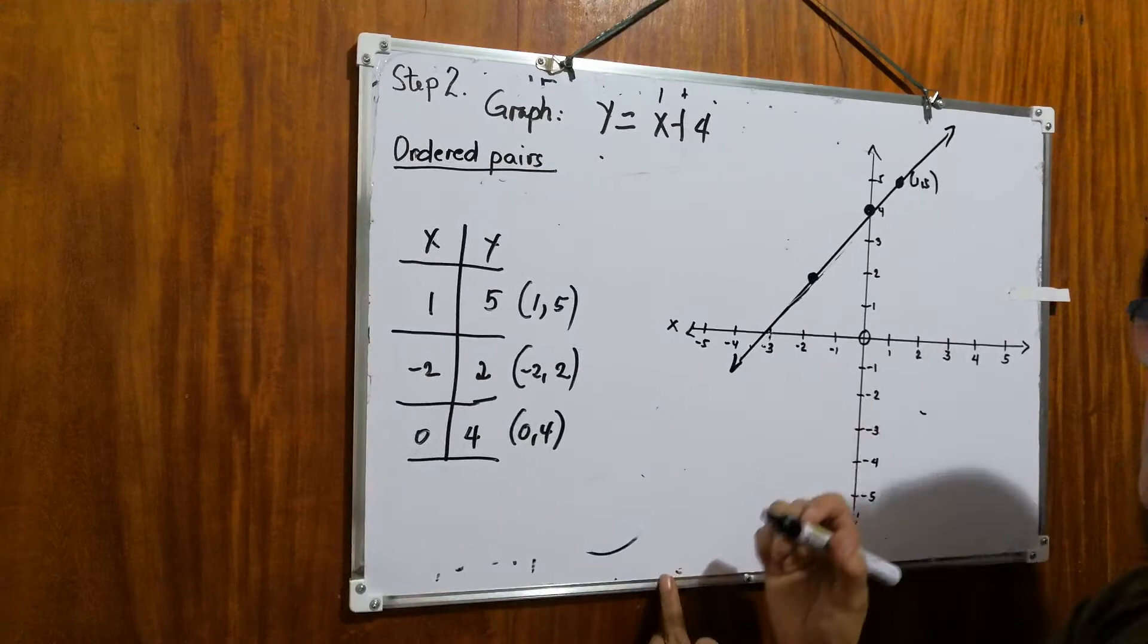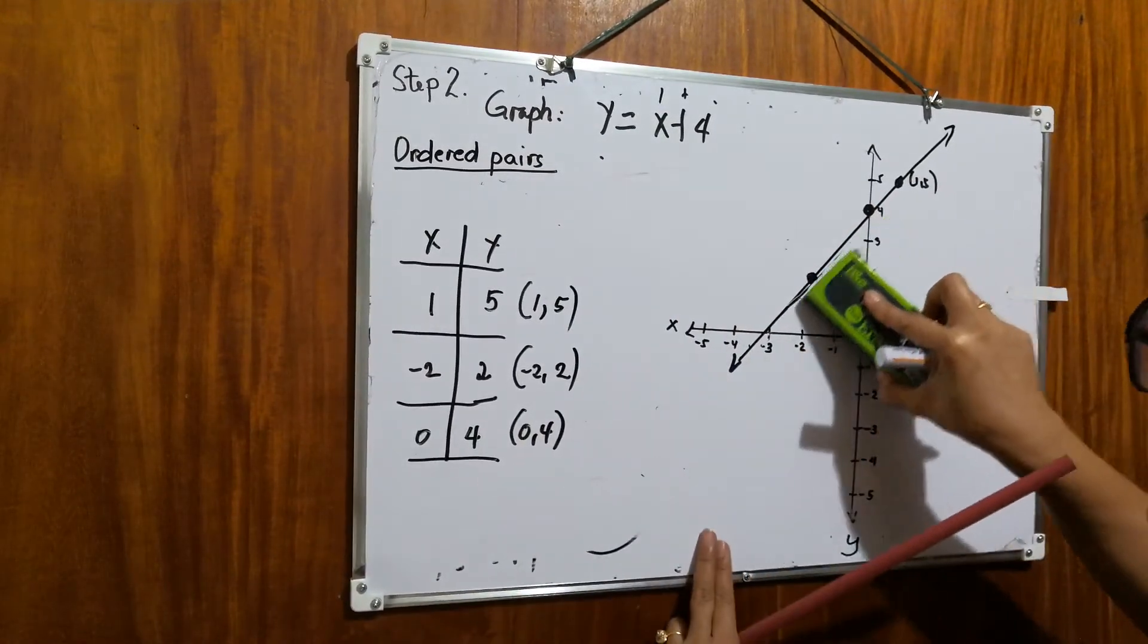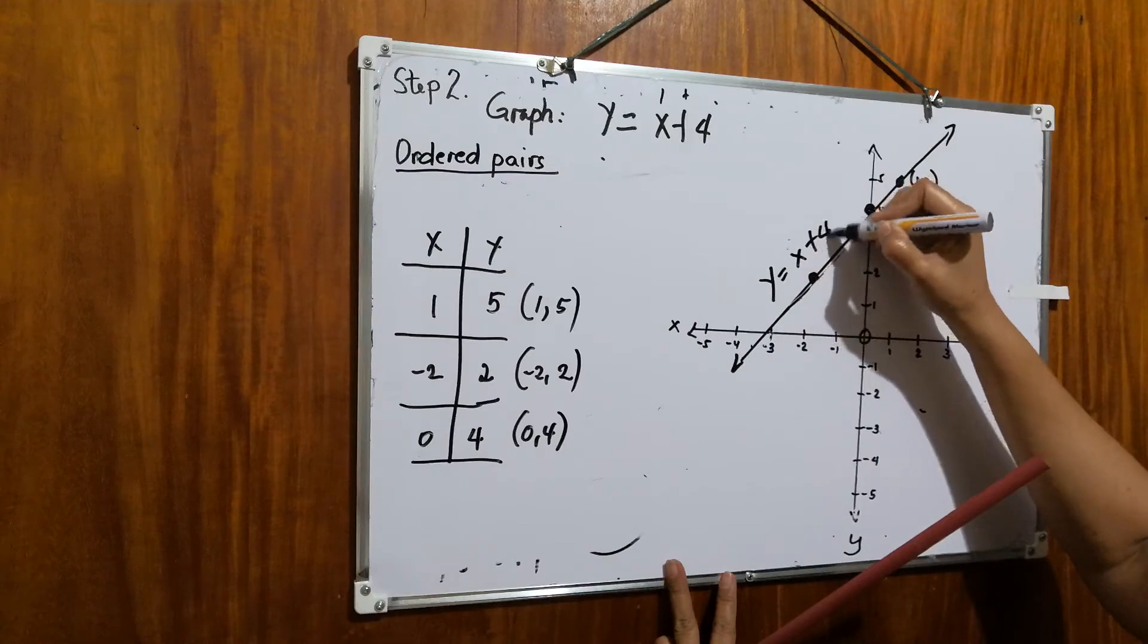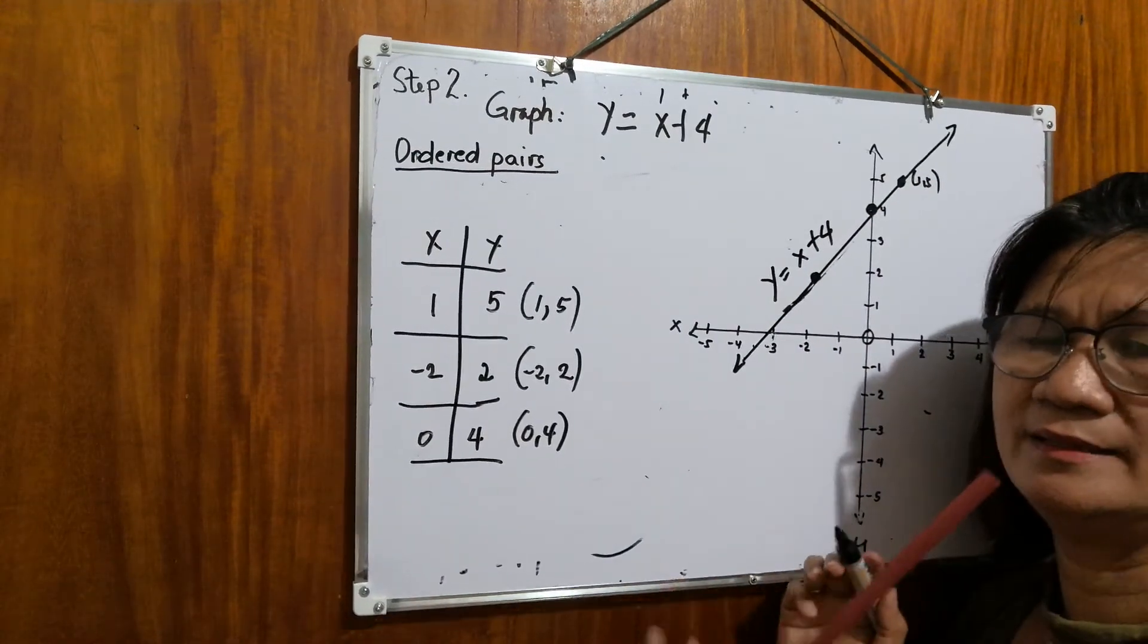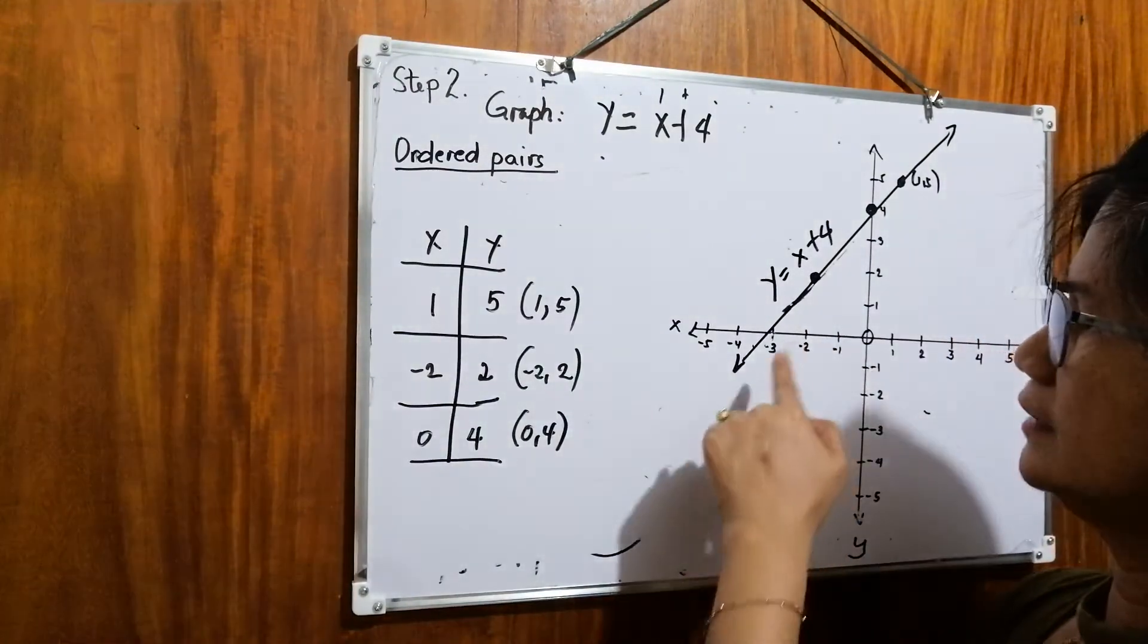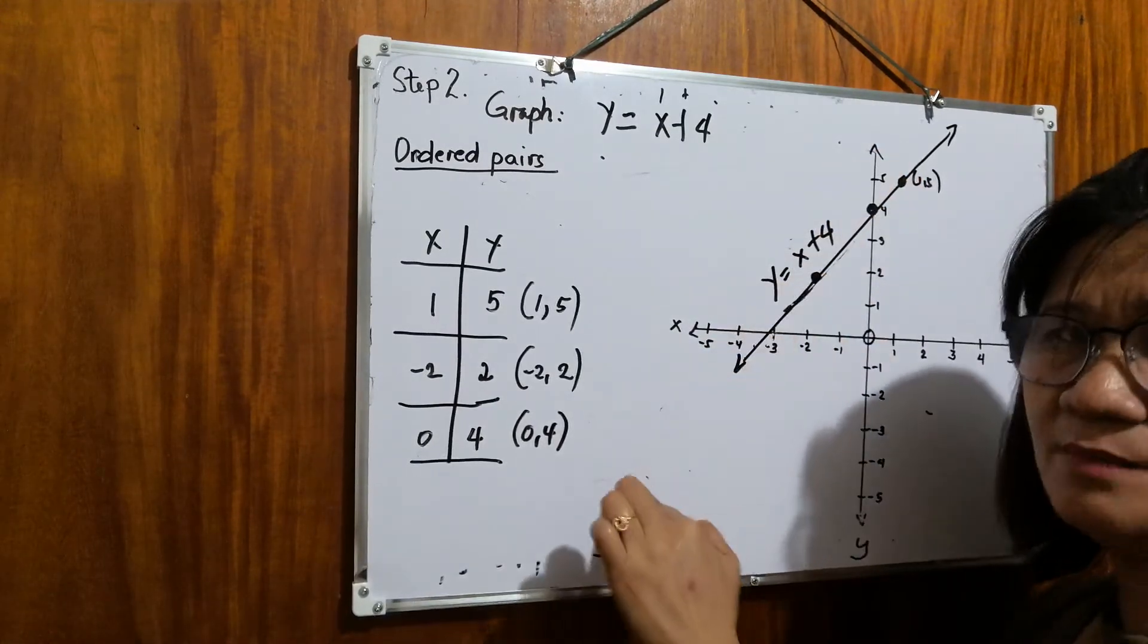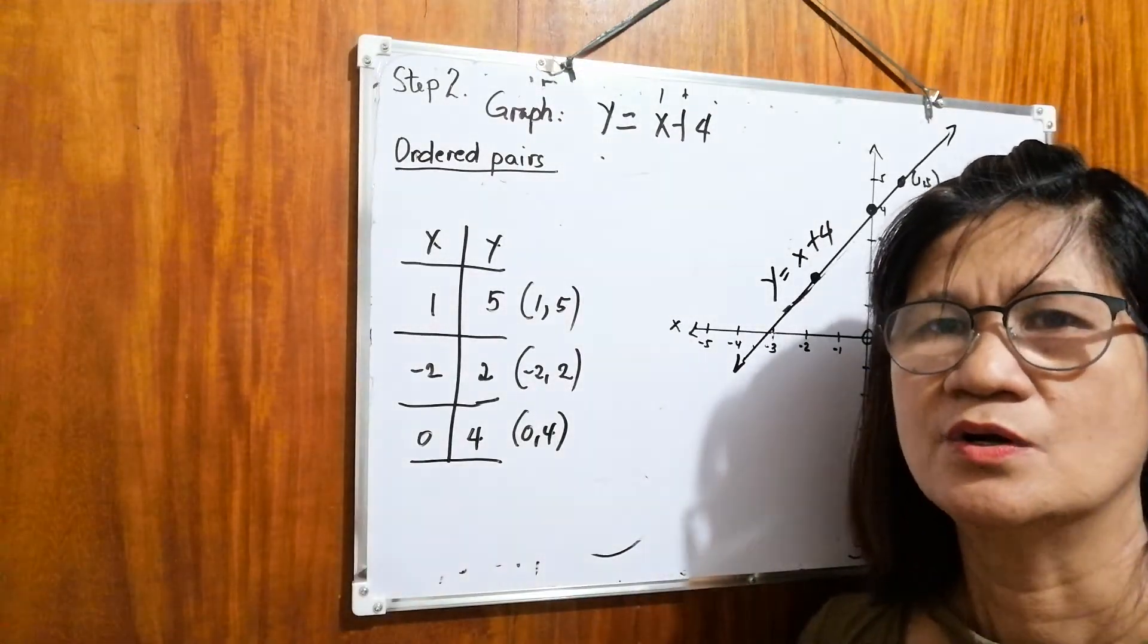So this line that you see, that's the graph of y equals x plus 4. It is a straight line. Again, all the points that are passed through by this line, all the points it passes through, they belong to ordered pairs.